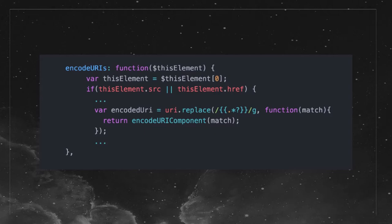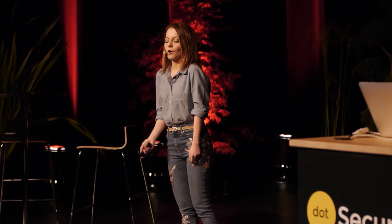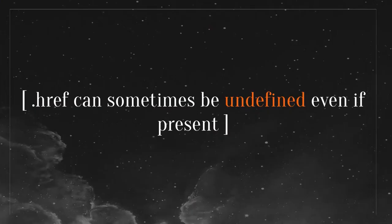The code looks really simple. You have an element, you're checking if it contains a source or an href reference - doing .source or .href. And then if it does, you're encoding it and returning it, and it's supposed to work, right? Well, it turns out that browsers are wonderful, but they're also really, really weird. One of the weirdnesses is that doing .href can sometimes be undefined, even if it's present in the code.